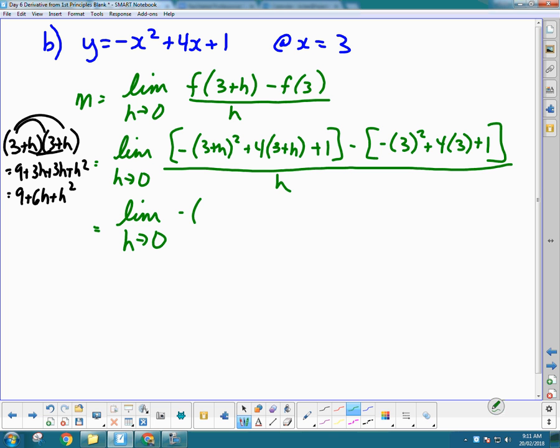Negative bracket, 9 plus 6h plus h squared. I'll rainbow the 4 next. So that's plus 12 plus 4h. Plus 1 doesn't have anything to rainbow with, so that's all there.